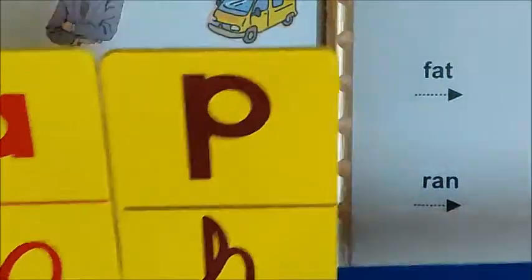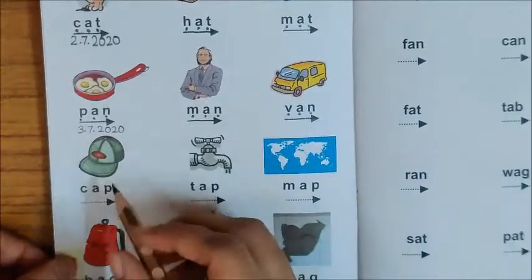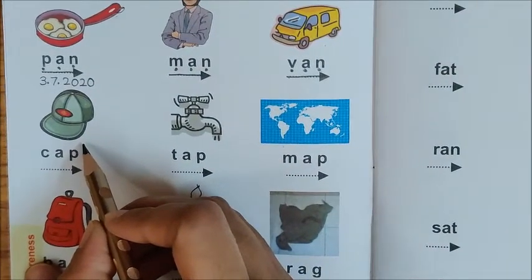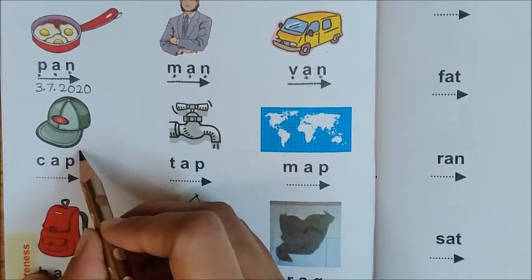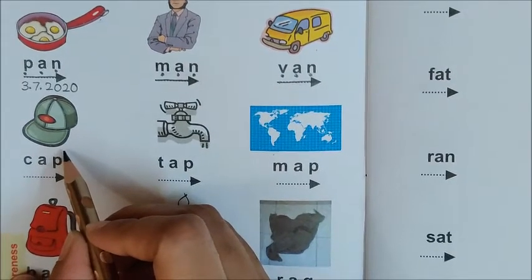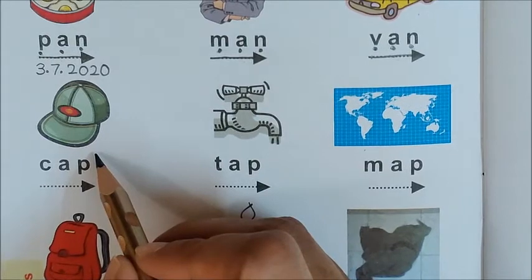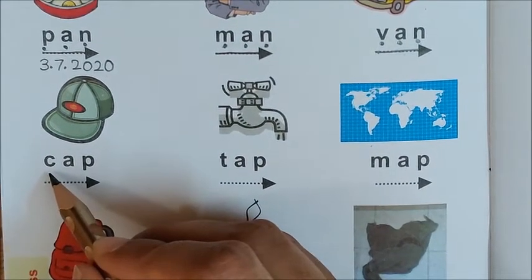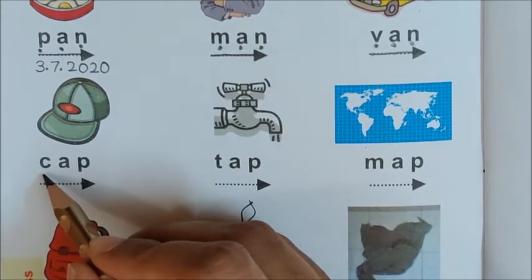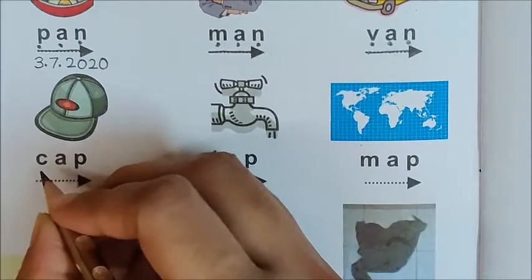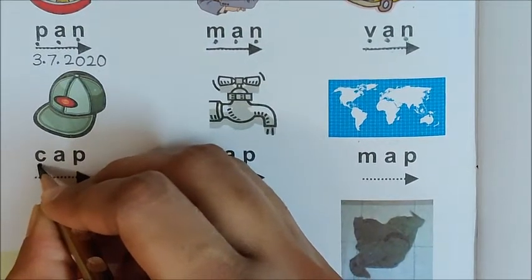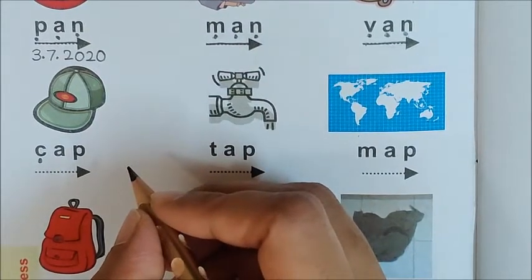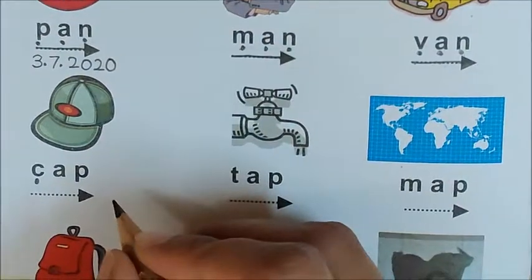Okay children, so let us begin. Take your pencil in hand. Now look — what is this picture children? Yes, this is a cap. Cap. Say after me: cap. What is the first sound children? App. What is the last sound children? App. Say after me: app is the first sound. Now put one dot for app. What is the next sound children? App. App is the next sound.